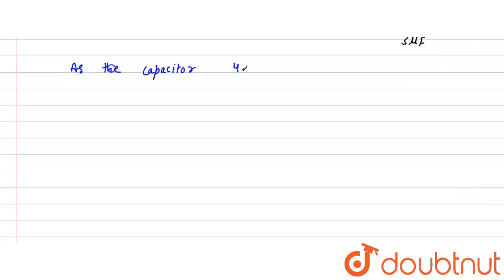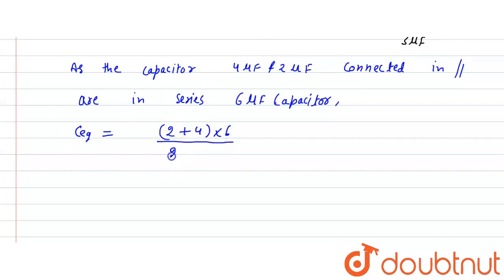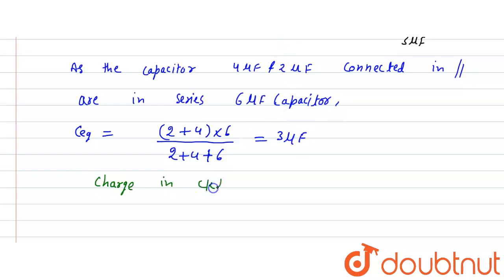The capacitors 4 microfarad and 2 microfarad connected in parallel are in series with the 6 microfarad capacitor. The equivalent capacitance equals (2 + 4) × 6 divided by (2 + 4 + 6), which equals 36/12, giving 3 microfarad.